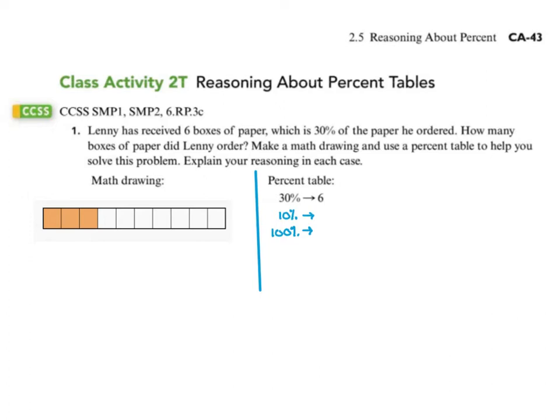Lenny has received six boxes of paper, which is 30% of the paper he ordered. Six boxes of paper, 30%. How many boxes of paper did Lenny order?